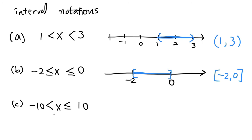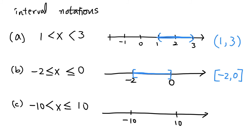In the third example, we have mixed inequalities: on the left-hand side there is no equality sign, but on the right-hand side there is. So this is mixed notation and we can mix parentheses and squared brackets. Here is negative 10 and here is 10, and x is between these two numbers, but negative 10 is excluded and 10 is included. In interval notation, this is written as negative 10 comma 10 with a parenthesis on the left and a bracket on the right.